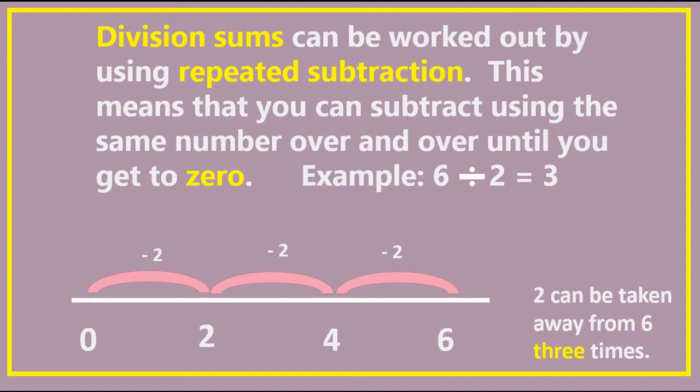Let's look at this example. Six divided by two equals three. Here we see that we are subtracting the number two over and over until we get to zero. So two can be taken away from six three times.